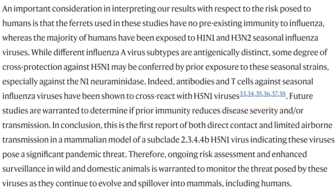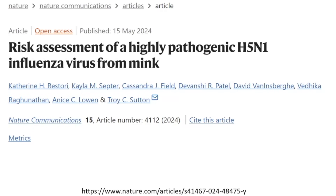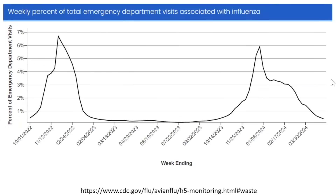Before anyone gets too concerned, there are important caveats. These ferrets had never been exposed to influenza — no pre-existing immunity. The paper notes this directly: the majority of humans have been exposed to H1N1 and H3N2 seasonal influenza viruses, and while different influenza A subtypes are antigenically distinct, some degree of cross-protection against H5N1 may be conferred by prior exposure to seasonal strains. This study highlights the real potential of a mutation changing the virus to make it more effective — something to watch for. The good news is that currently, hospitalizations and emergency room visits for all influenza A are going down.